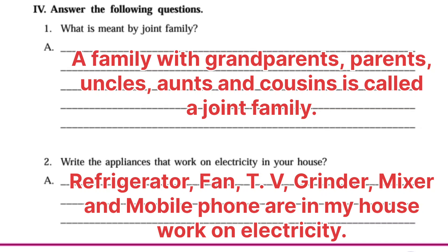Second one — Write the appliances that work on electricity in your house. Refrigerator, fan, TV, grinder, mixer, and mobile phone are in my house and work on electricity.